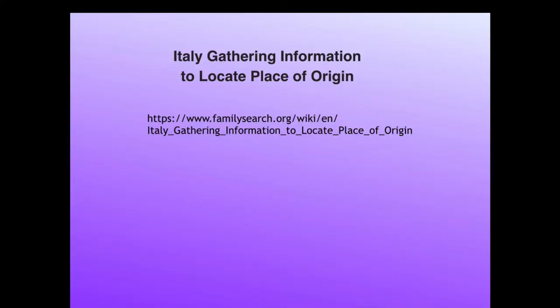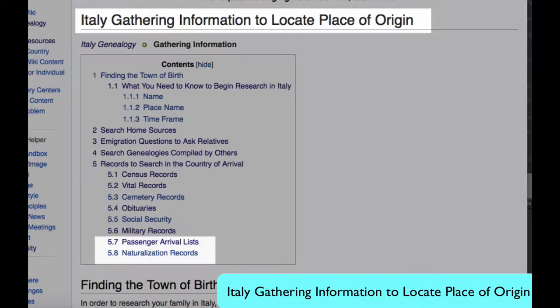This article, listed in the notes below this video, is a checklist of all the types of records you can use to help make that link back to Italy. We'll focus on passenger arrival lists and naturalization records. The records I will be showing you are typical of records that you would see after 1906. Prior to then, the records are not as helpful.